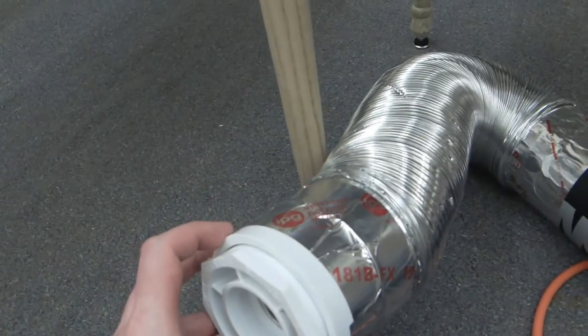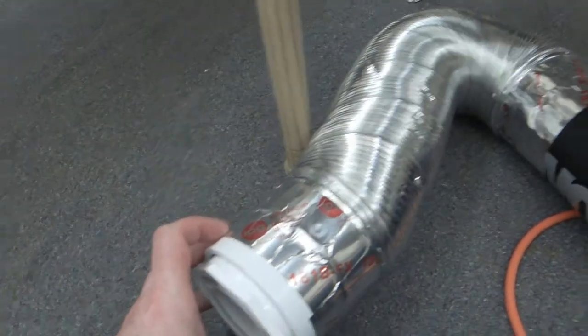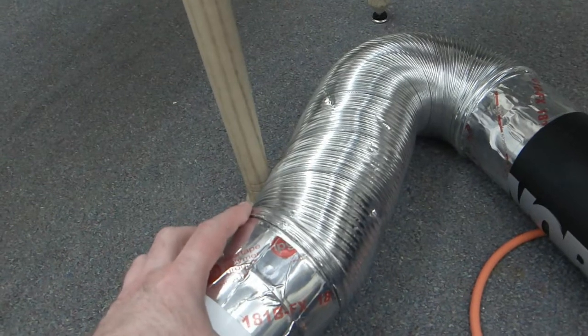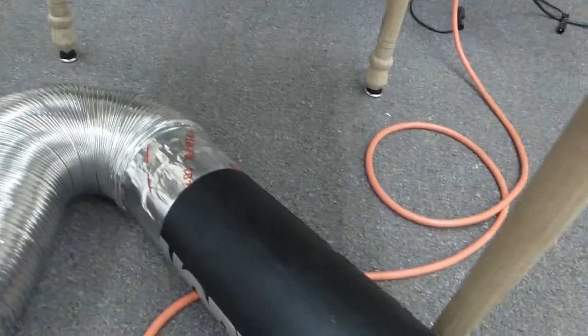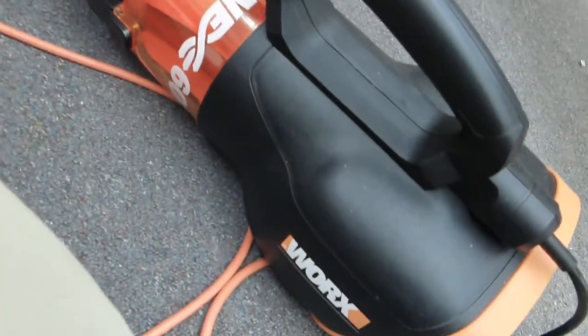The exterior diameter of the PVC coupler neatly matches the interior diameter of the four inch flexible ductwork that you'd find on the back of a dryer. The duct also neatly fits onto the Works Turbine 600 leaf blower, although I suspect you could use other leaf blowers as well.